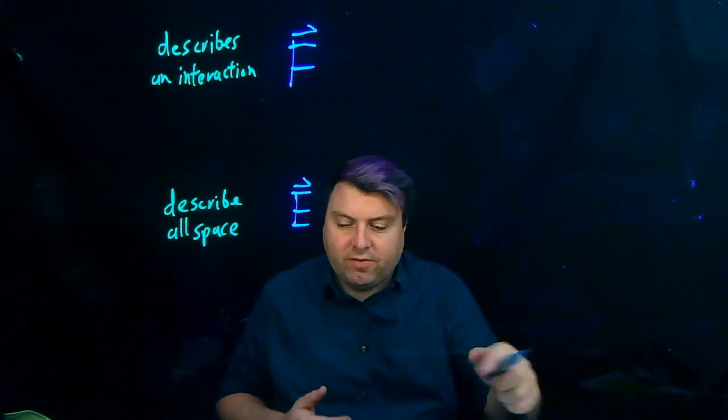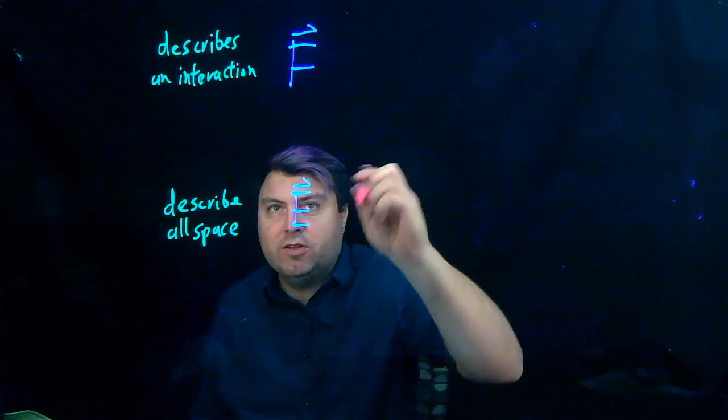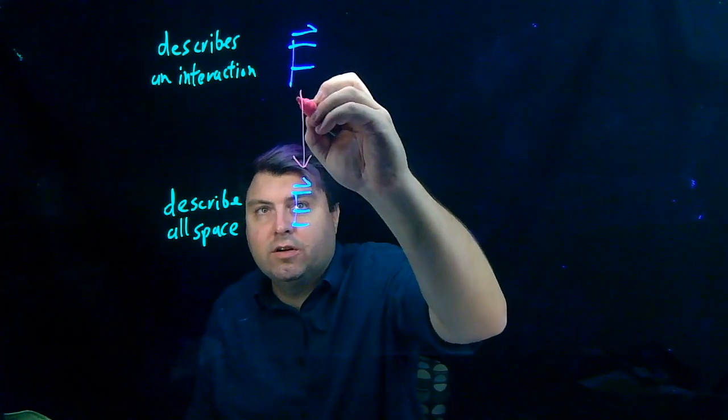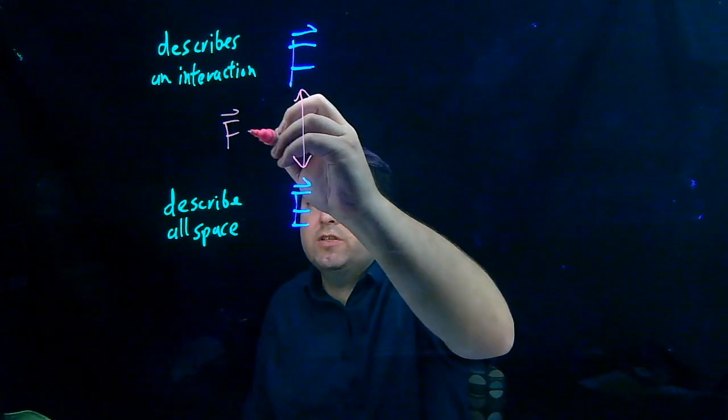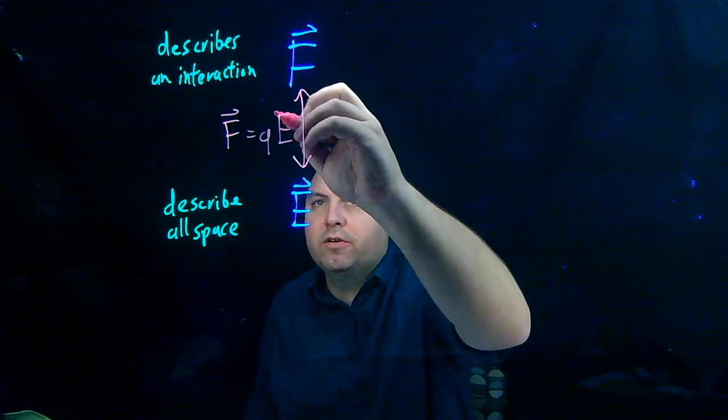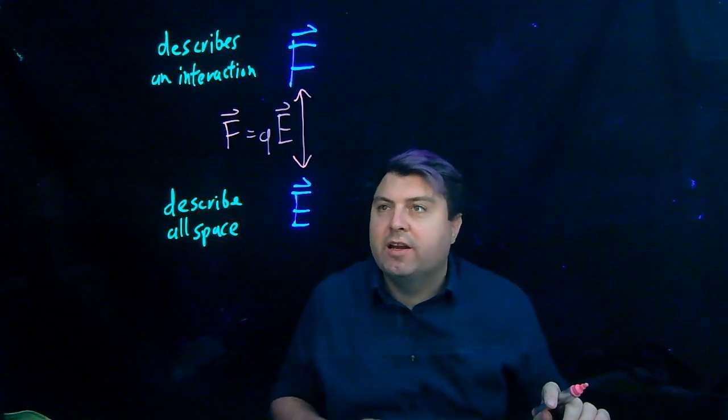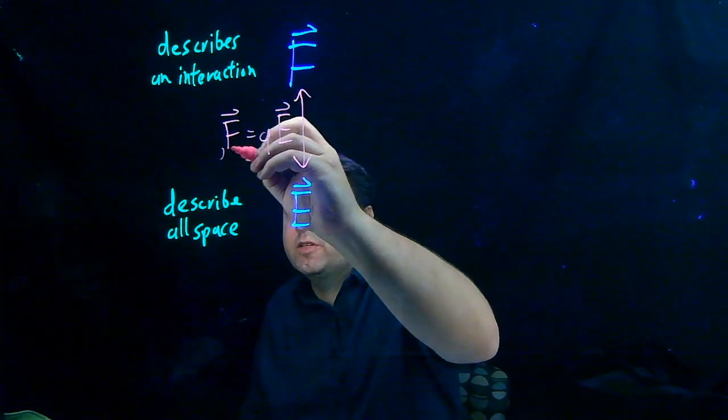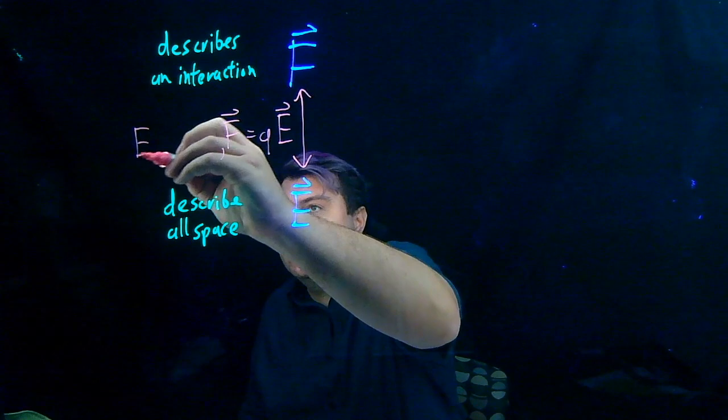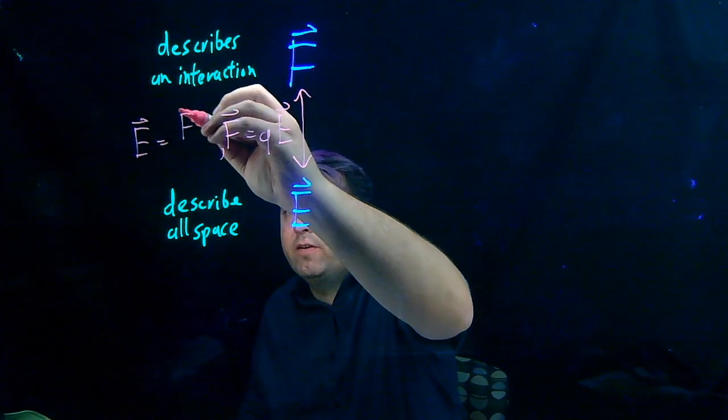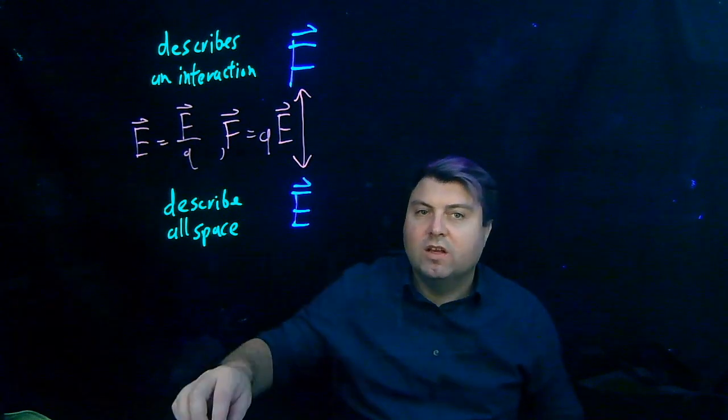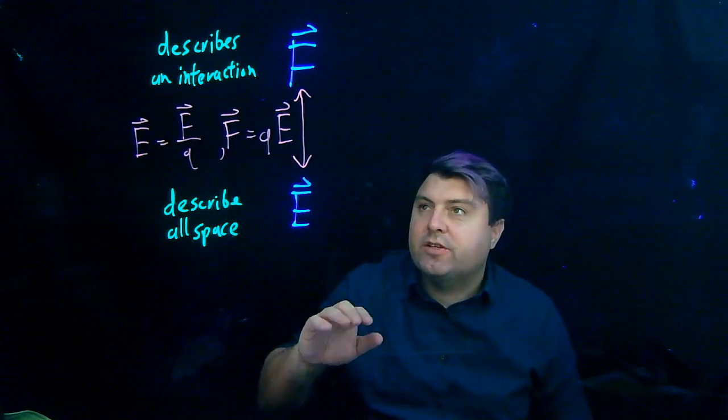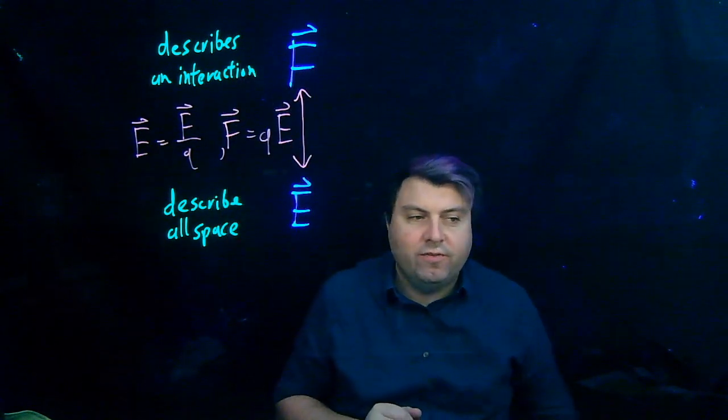With this electric field, we have a connection between the two. The force is equal to Q times the electric field. And of course we can divide that as well, so we can also say that E is equal to F over Q. That's how we start with this - we have force and electric field.